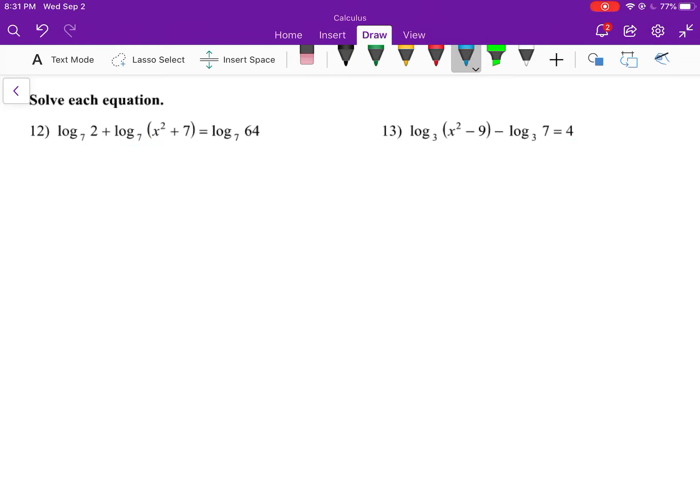Let's look at number 12. What we want to do with logarithm equations is simplify each side as much as we can using the rules of logarithms. We see here that two logarithms with the same base are added, so we can use the product rule. We can write log base 7 of, and multiply these two arguments.